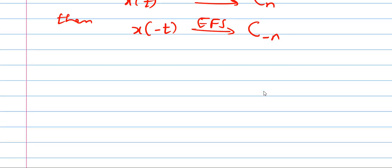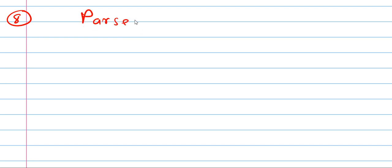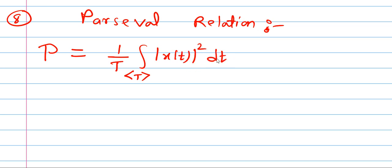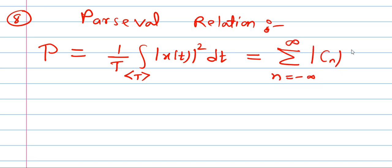Property number 8 is Parseval's relation, used to calculate power. The power formula is: power equals one over T, integrated over one period, of the modulus of X of t squared dt. In terms of exponential Fourier series coefficients, power equals the summation from n equals minus infinity to plus infinity of the modulus of Cn squared.